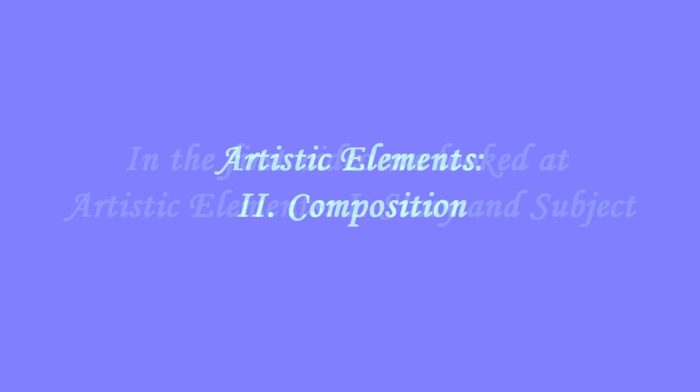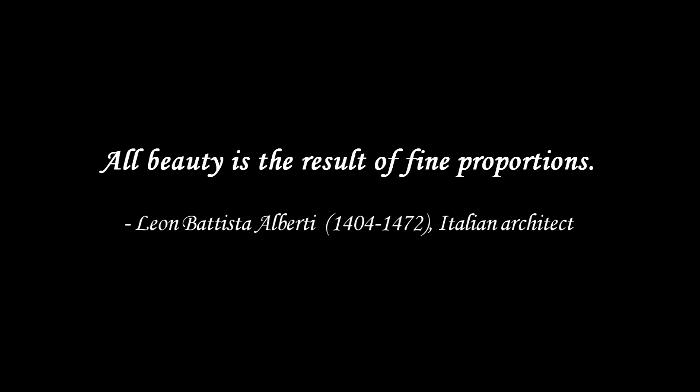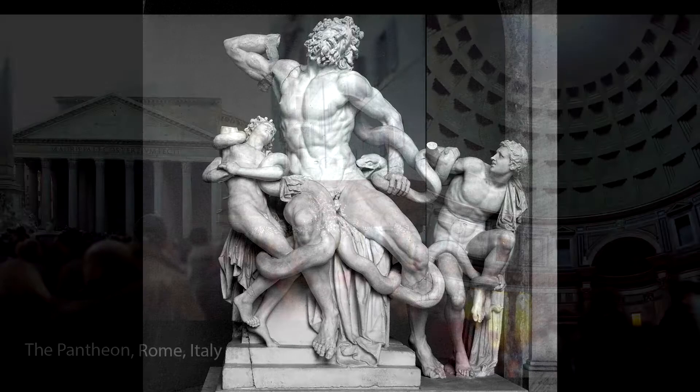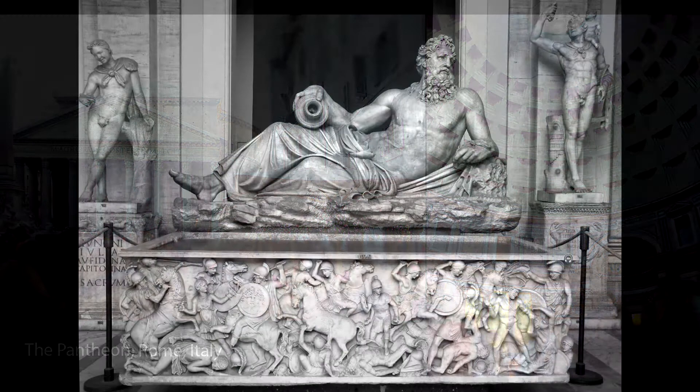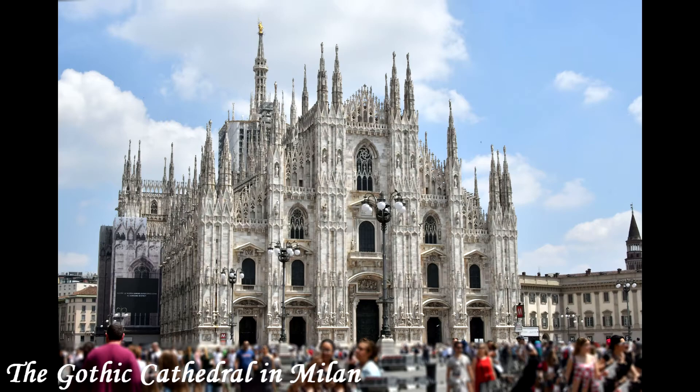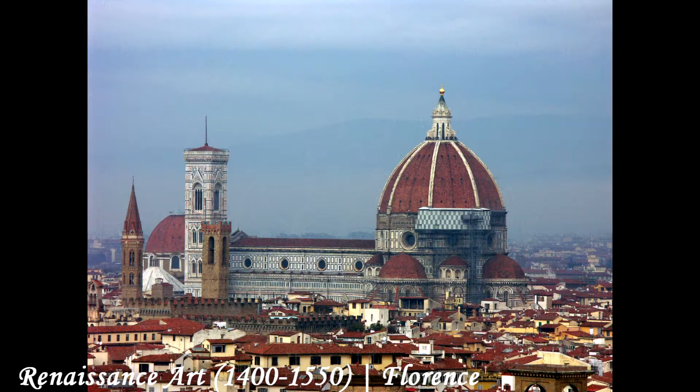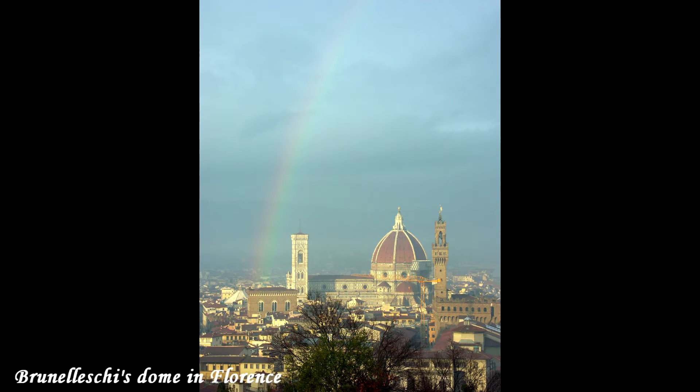All beauty is the result of fine proportions. The Greeks were the first to invent and use mathematical proportion, linear perspective, and the concept of divine proportion and scale in art and architecture. Because of a conversion to Christianity, these postulates were abandoned in Middle Age Europe, to reappear in Italian Renaissance art several centuries later.